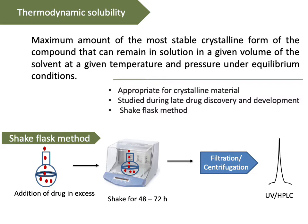The solute is dissolved by vortexing, and more solute is added if all the solute dissolves. Continue adding solute until some precipitate appears at the bottom of the flask. Once this has occurred, keep it for equilibration for at least 48 hours and up to 72 hours, depending on the compound's nature, in an incubator shaker at 35°C. After the prescribed period, remove the round-bottom or conical flask, subject it to filtration or centrifugation, and collect the supernatant for suitable analytical method to determine the unknown concentration.